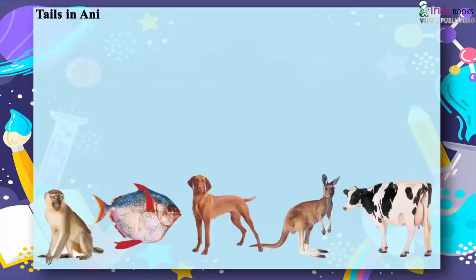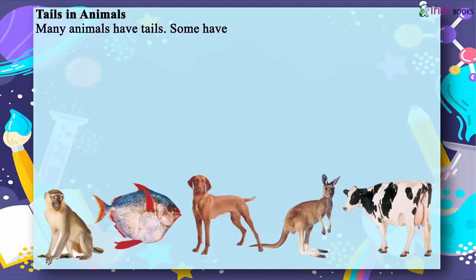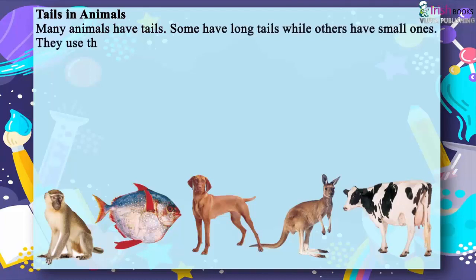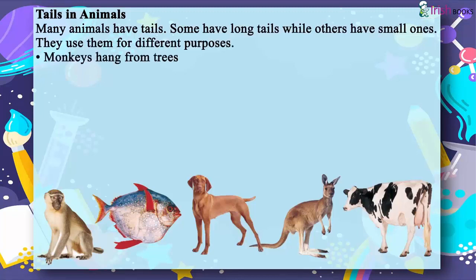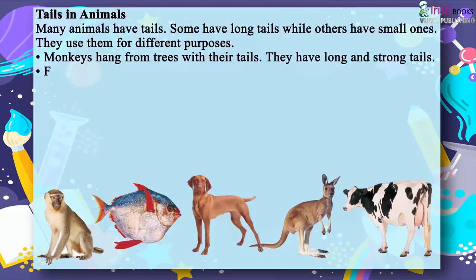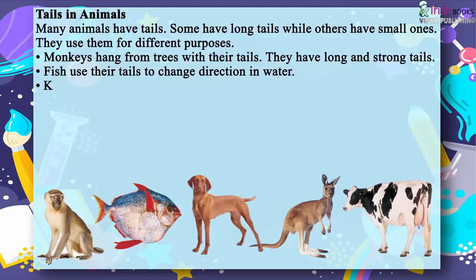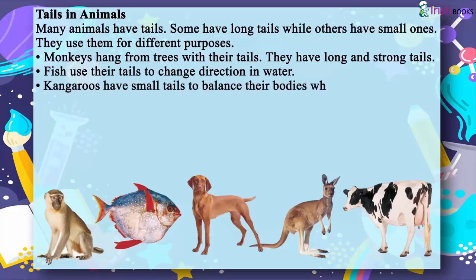Tails and animals. Many animals have tails — some have long tails, while others have small ones, and they use them for different purposes. Monkeys hang from trees with their long and strong tails. Fish use their tails to change direction in water. Kangaroos have small tails to balance their bodies while sitting on their hind legs and hopping.